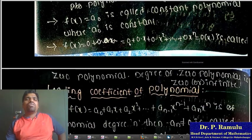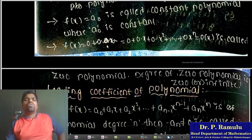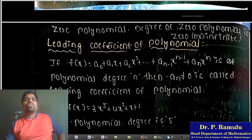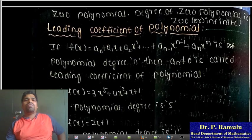What about zero? If f(x) equals 0, meaning all coefficients are 0, then f(x) = 0 is called the zero polynomial, and the degree of the zero polynomial is 0 or infinite.